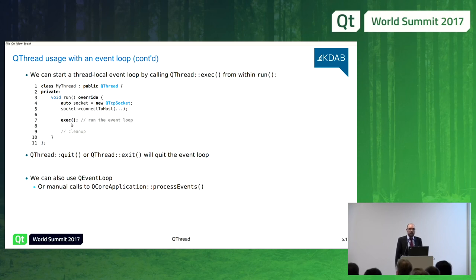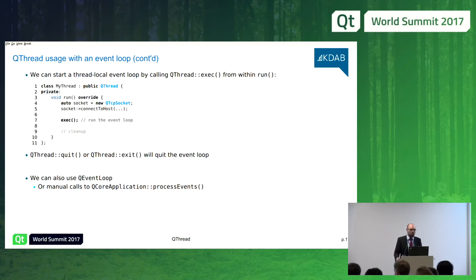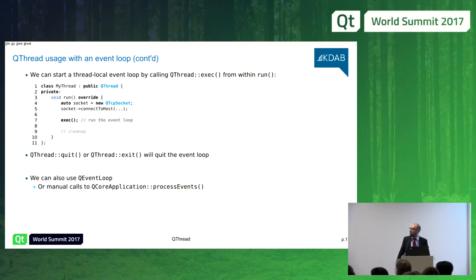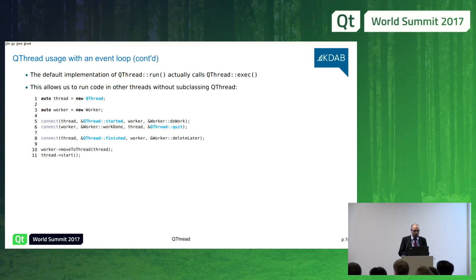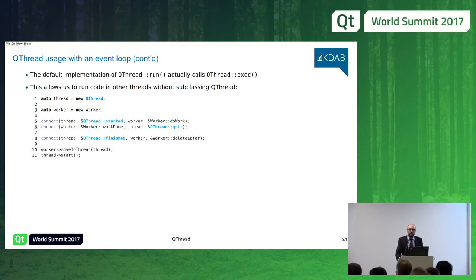There is a nice thing about QThread: if you don't subclass QThread and just use a plain QThread and call start, the default implementation of run is actually just going to call exec right away. So if you just use a plain QThread and start it, you are launching an event loop on a separate thread. This is useful because you can build event-driven processing in a separate thread without the need of subclassing QThread.